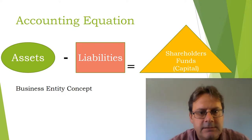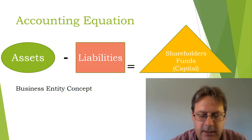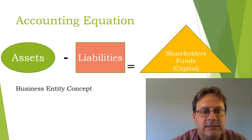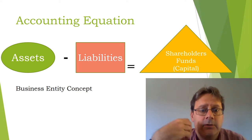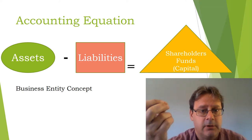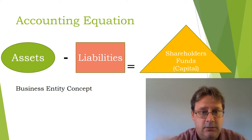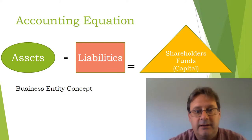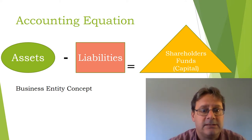This is the famous accounting equation. Before we get into the equation, you'll see I've written underneath it the business entity concept. When you are preparing financial statements for an organization, you only include those transactions that relate to the organization itself. So if I'm working as a sole trader producing training material and delivering training courses, my accounts only show income and expenditure for that business — not things like going to the pub or buying dog food. That is the business entity concept.